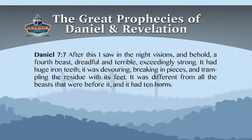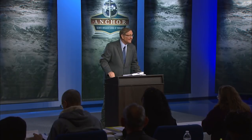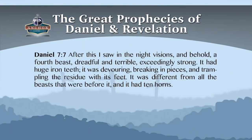We don't have to depend on Ellen White alone — the Bible itself tells us that it is the iron that is strong. Notice Daniel chapter 7 verse 7: 'After this I saw in the night visions, and behold, a fourth beast, dreadful and terrible, and exceedingly strong. It had huge iron teeth; it was devouring, breaking in pieces and trampling the residue with its feet. It was different from all the beasts before it and it had ten horns.' So what is the strong part in the feet? It's the civil power of Rome — the state part.